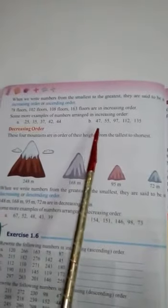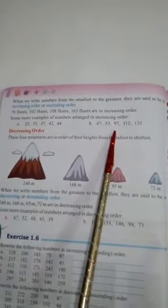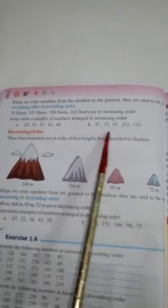Now one more example: 47, then 55, then 97, then 112, and then 135. These numbers are also arranged in increasing order.